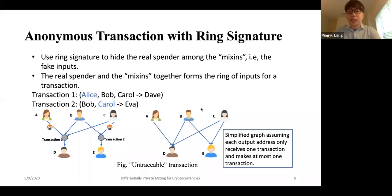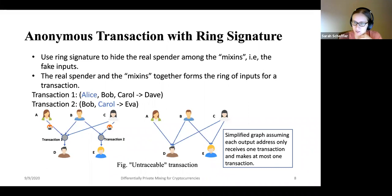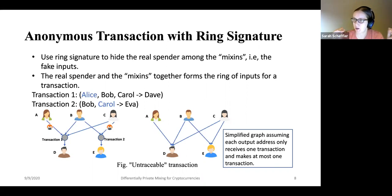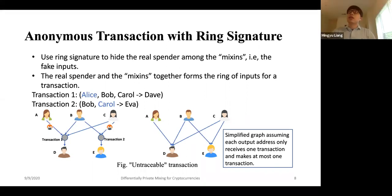Question: is the assumption that each address only receives one transaction inherent to Monero, or an assumption made for this paper? This is inherent in Monero. The one-time use of addresses is also advocated in Bitcoin — if you reuse an address, you're more likely to get exposed.